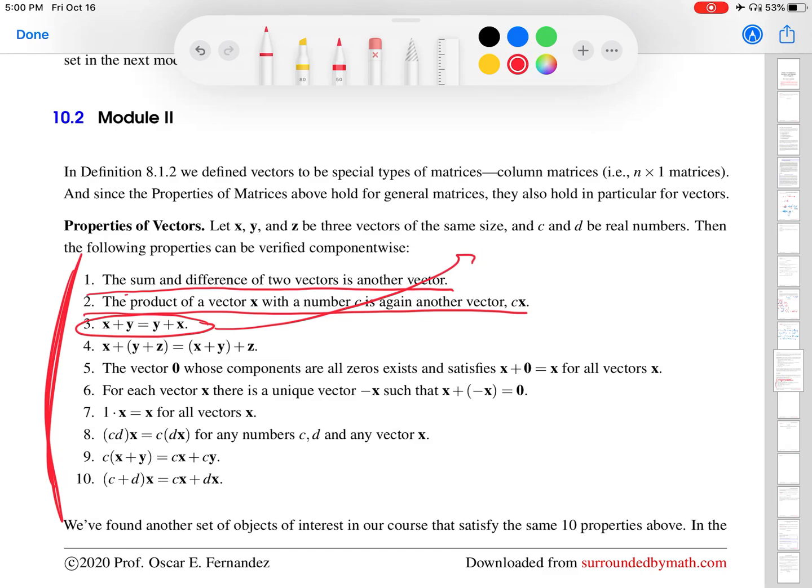If you wanted to verify this property for V sub 2, for example, what would you do? You would say, oh, if I have one vector plus another vector, is it equal to the same thing as if I swap which vector I'm adding first? And of course you can see, based on our definitions, that is going to equal that, because in both cases you add the components. And for real numbers, it doesn't matter which number you add first: x1 plus y1 is the same thing as y1 plus x1. That's how you can go through and verify the rest of these definitions for the space V sub n, whatever n is.